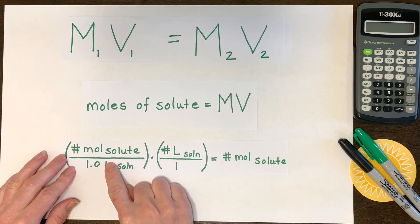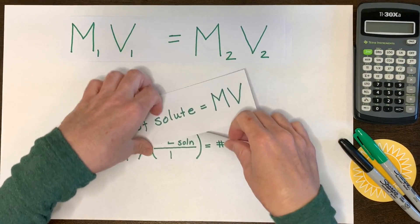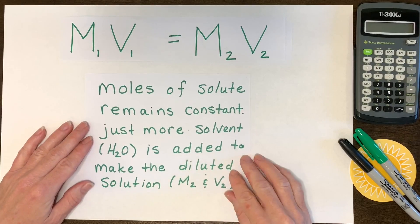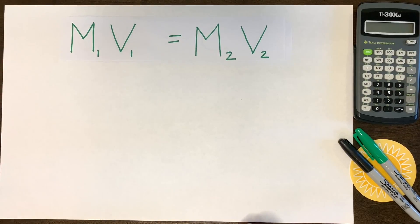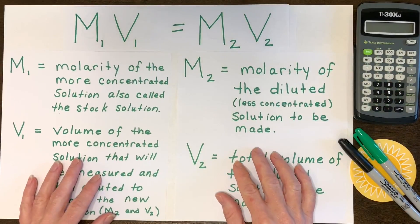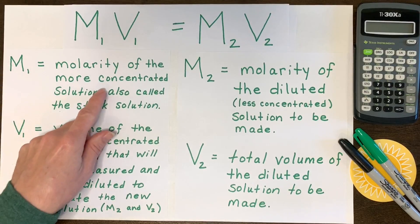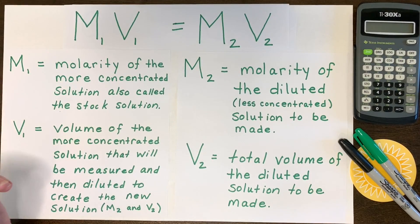This works because the moles of solute are equal on both sides of the equation. The moles of solute taken from the more concentrated solution equal the moles in your more dilute solution — the moles of solute remain constant; you just add more solvent. Write down the definitions: M1 is the molarity of your initial, more concentrated stock solution; V1 is the volume you'll measure out; M2 is the molarity of your new dilute solution; and V2 is the total volume of that new solution.